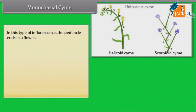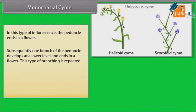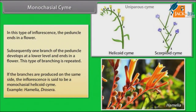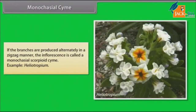In monochasial cyme, the peduncle ends in a flower. Subsequently, one branch of the peduncle develops at a lower level and ends in a flower. This type of branching is repeated. If the branches are produced on the same side, the inflorescence is said to be a monochasial helicoid cyme. Example: Hamelia, Drosera. If the branches are produced alternately in a zigzag manner, the inflorescence is called a monochasial scorpioid cyme. Example: Heliotropium.